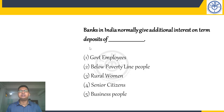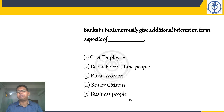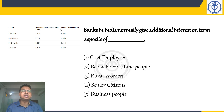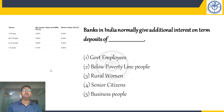The question is: banks in India normally give additional interest on term deposits for which group — government employees, below poverty line people, rural women, senior citizens, or business people? The answer is senior citizens. The rate of interest is generally 0.5 percentage points higher for senior citizens. For example, for NRO deposits, non-senior citizens get 4.5%, while senior citizens get 5%. For 6–12 months, it is 5.80% versus 6.30% for senior citizens.